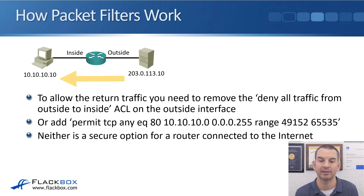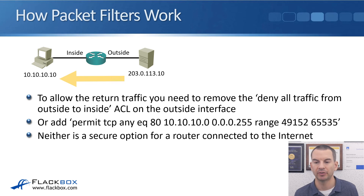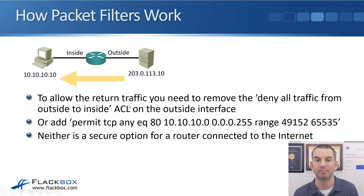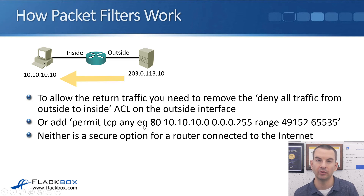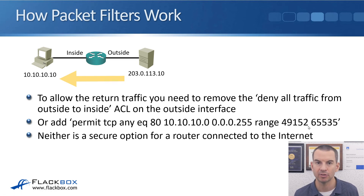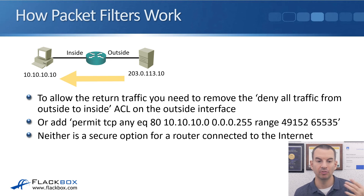To allow return traffic in this scenario, you'd either need to remove the deny-all ACL on the outside interface — which removes security entirely — or add a rule like 'permit tcp any eq 80 10.10.10.0 0.0.0.255 range 49152 65535'. With the second option, you're opening up a security hole by allowing any source claiming to be port 80 to reach your inside hosts across a wide port range, without actually tracking connection state.